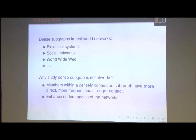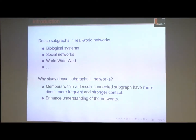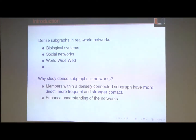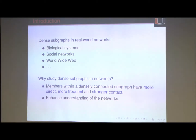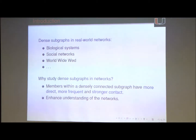Here are some very interesting examples in real-world networks. For example, in biological systems, you can establish a network based on protein-protein interaction or protein-DNA interaction. In those networks, a densely connected subgraph is usually a group of proteins or DNA that work together in certain biological functions. And in social networks, a densely connected subgraph is usually a group of individuals or organizations that share common interests or demographic information.